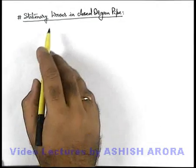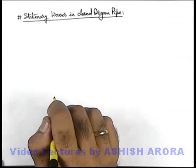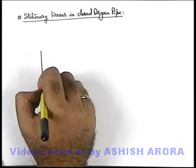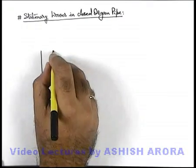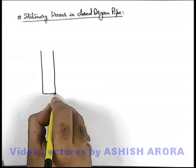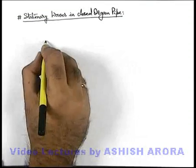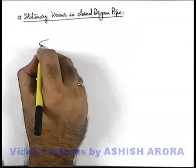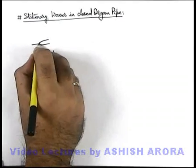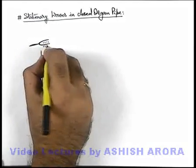Let us discuss stationary waves in a closed organ pipe in detail. We are given a closed organ pipe which is open at one end and closed at the other end. We bring a tuning fork of a specific frequency close to the open end of this organ pipe.